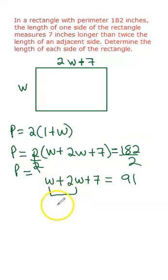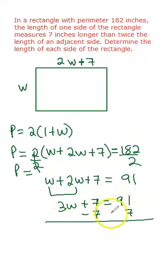Then I combine like terms, so it would be 3w plus 7 is equal to 91. I also subtract 7 on both sides. So it would be 3w is equal to 91 minus 7 which is 84.